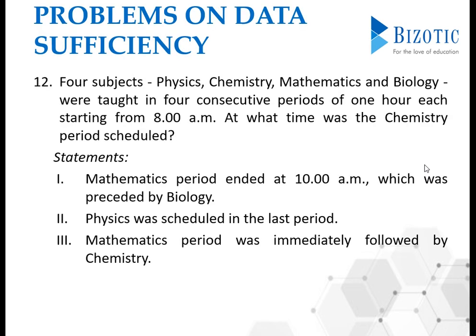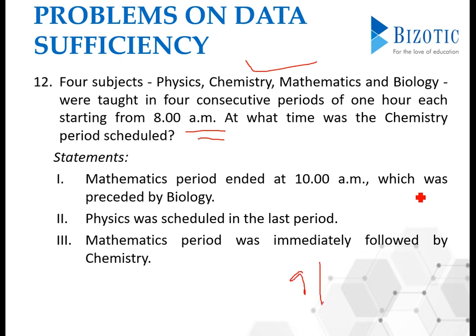Four subjects — physics, chemistry, mathematics, and biology — were taught in four consecutive periods of one hour each, starting from 8 a.m. At what time was the chemistry period scheduled? Statement 1: Mathematics period ended at 10 a.m., so mathematics started at 9. It was preceded by biology, so biology ran from 8 to 9, and mathematics from 9 to 10.